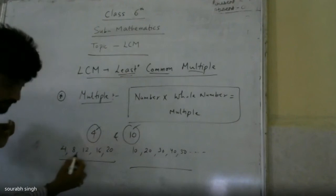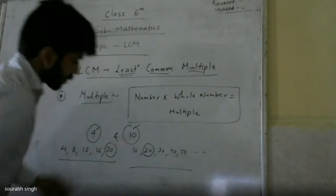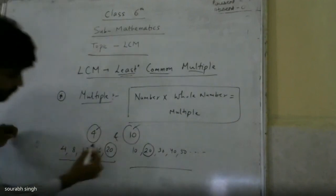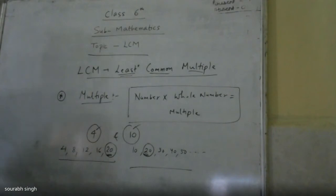What is that? 20 is the least common multiple here. The first, or you can say the least common multiple.